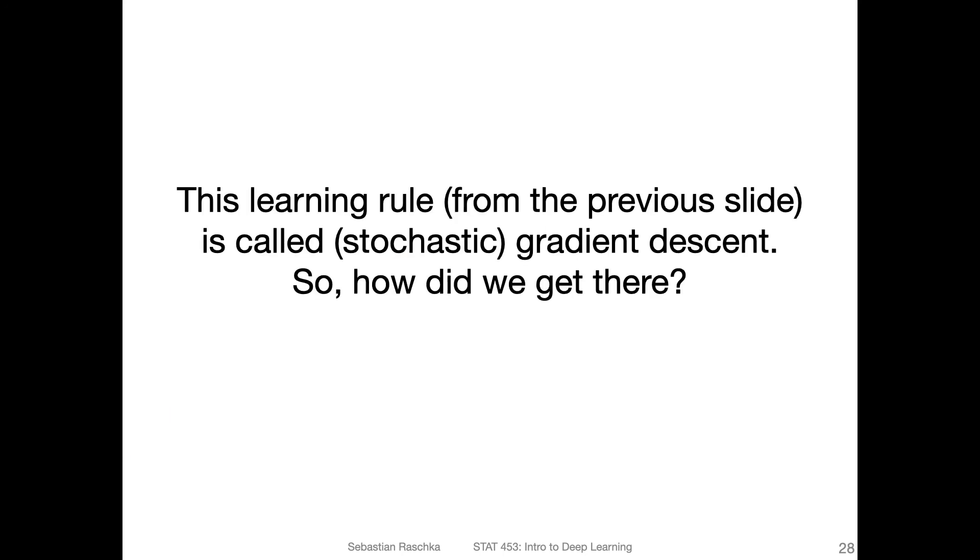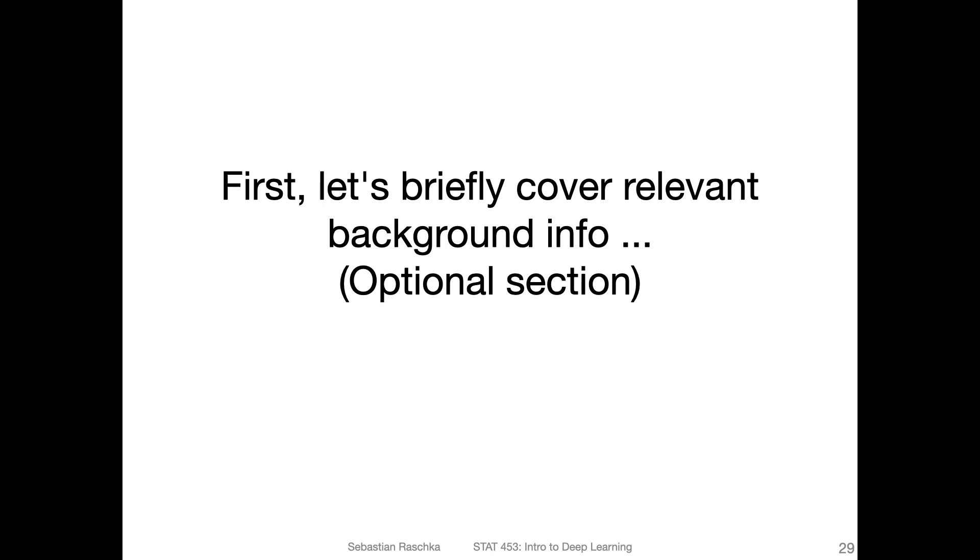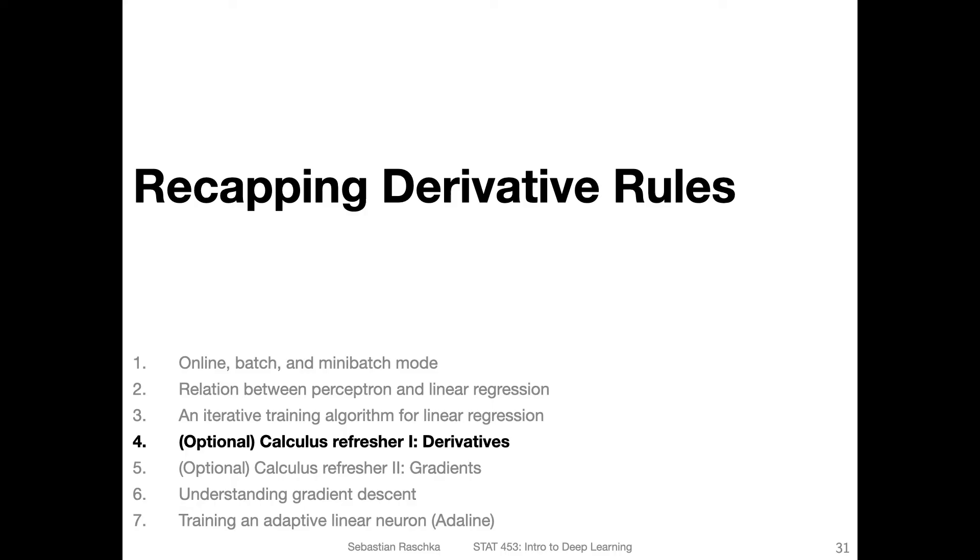So the learning rule from the previous slide now is called stochastic gradient descent. I was showing you this learning rule, but I didn't show you where this learning rule came from. So how did I derive this learning rule? In order to understand that, there's some little calculus required. I think most of you already took calculus classes because that was a prerequisite for this class. If you are a little bit rusty, I have two bonus videos I will be recording after this video. So you can maybe refresh your calculus skills, but it's not necessary. You can also jump ahead to this video where I will explain where the learning rule comes from. And if you like, you can watch these two videos where I go over some of the calculus concepts.